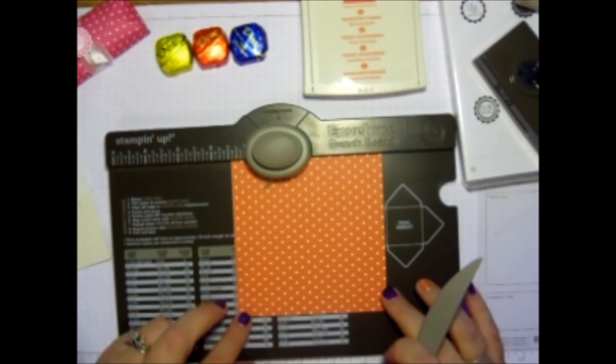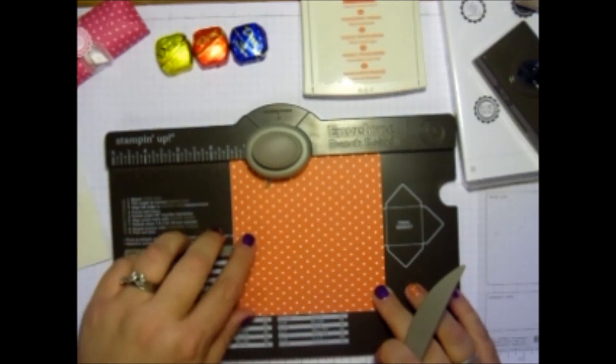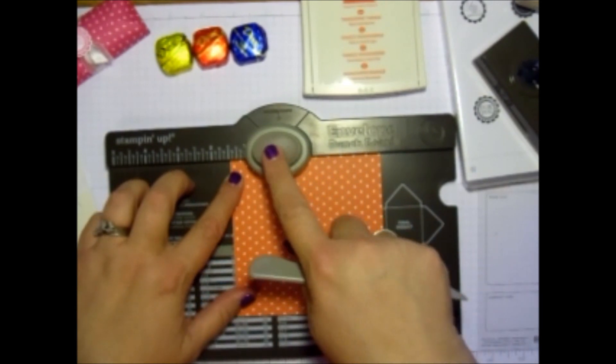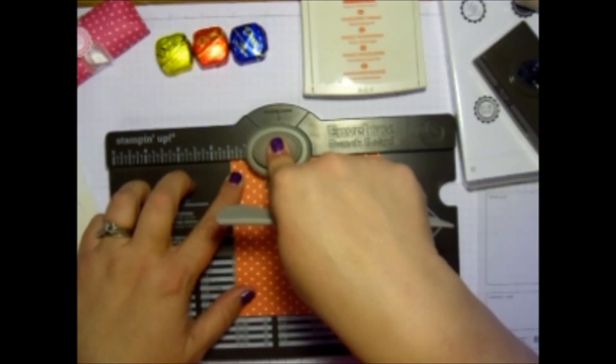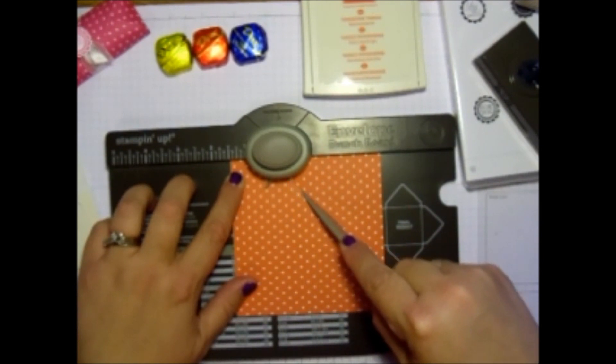And so what you're going to do is you take your four and a half by four and a half. And you're going to put your first line at a half inch. So just like you're making an envelope, you're going to punch. And then you're going to set that in here and score.